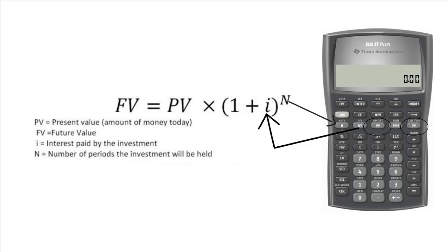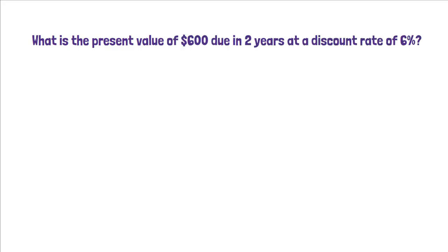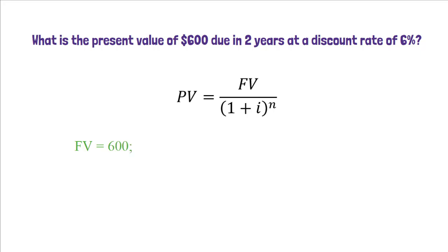Here is an example. What is the present value of $600 due in two years at a discount rate of 6%? Using the TVM formula, what we are given is FV equals 600, i equals 0.06, n equals 2, and we need to find PV.